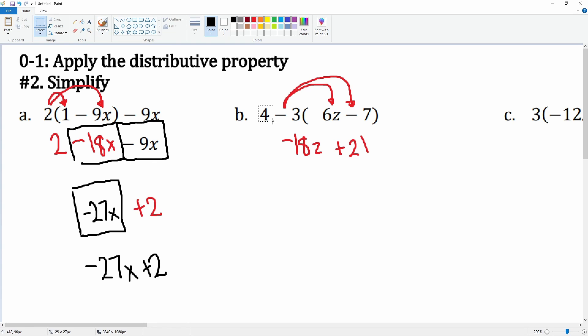Nothing happens to that 4 out in front, so we can just bring it straight down. Now we're looking to combine some like terms. The like terms that I see here are the constant terms of 4 and 21.